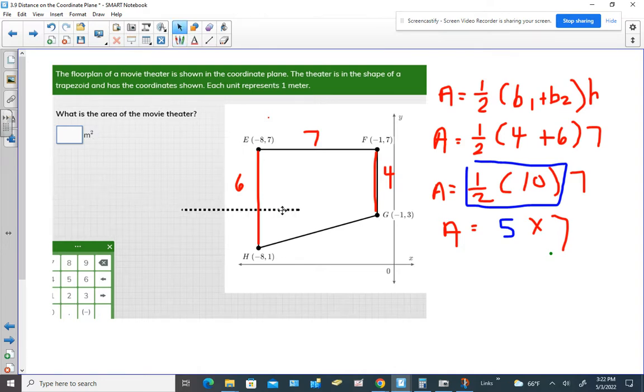Now another option that we could have done is we could have found the area of the rectangle. So if we found the area of the rectangle, we could have multiplied 7 times 4. That would have given us the area of this piece. 7 times 4 would be 28.